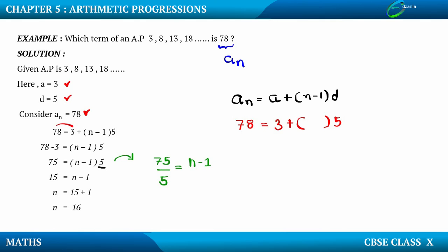Therefore, 78 is the 16th term. Just as we have the 1st, 2nd, 3rd, 4th terms in the sequence, moving further along, the 16th term — denoted as a16 — is 78. This way we can extend the sequence accordingly.